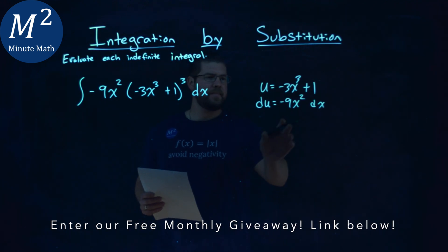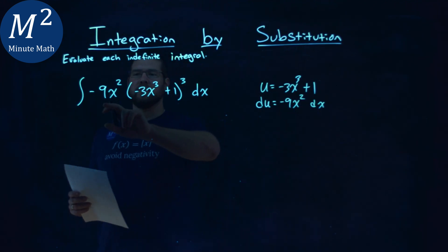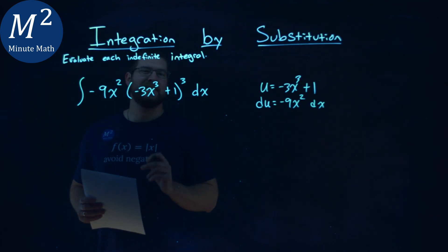This is lovely now, right? We have negative 9x squared dx right here, that's our du, and our u value is inside the parenthesis. So let's go rewrite this now.